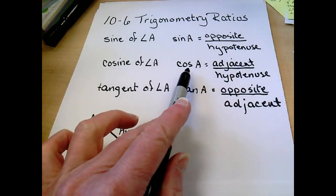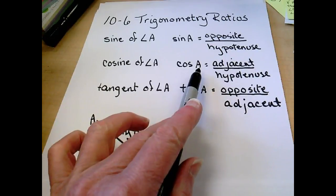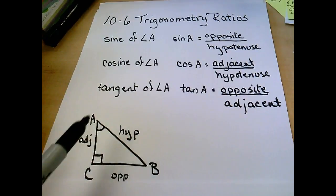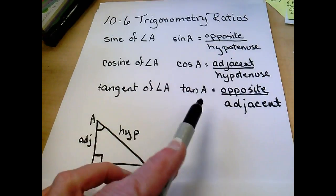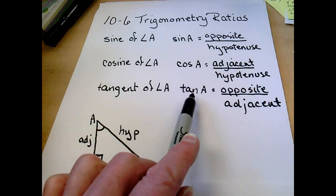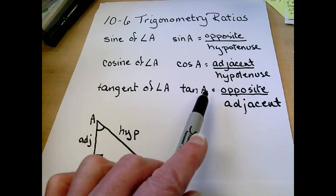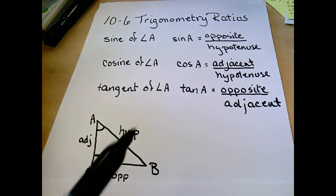Cosine, we abbreviate COS. Of angle A is your adjacent over hypotenuse. Tangent is always abbreviated T-A-N. A, opposite over adjacent.